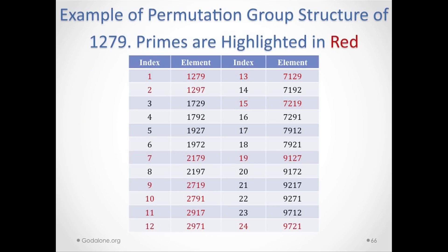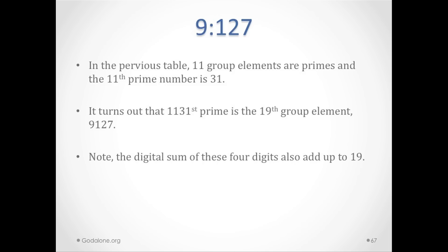The indices of these prime factors are 9, 1, 2, and 7. When you write the permutation of these, you notice that the 19th group element is 9127, and chapter 9 actually has 127 verses. There are 11 group elements of prime in that table, and the 11th prime is 31. But the 1131st prime is the 19th group element, which is 9127. Note that the digital sum of these four digits also adds up to 19: 9 plus 1 plus 2 plus 7 is 19.